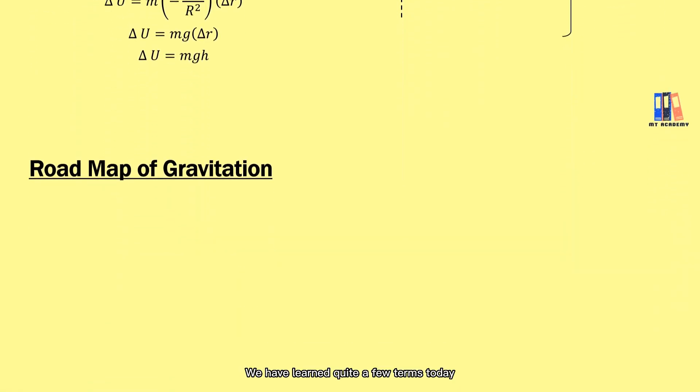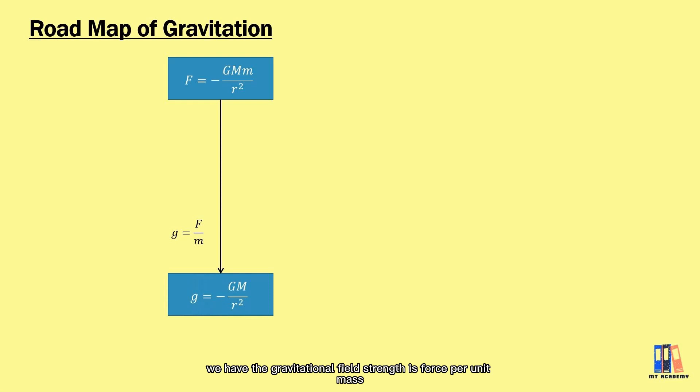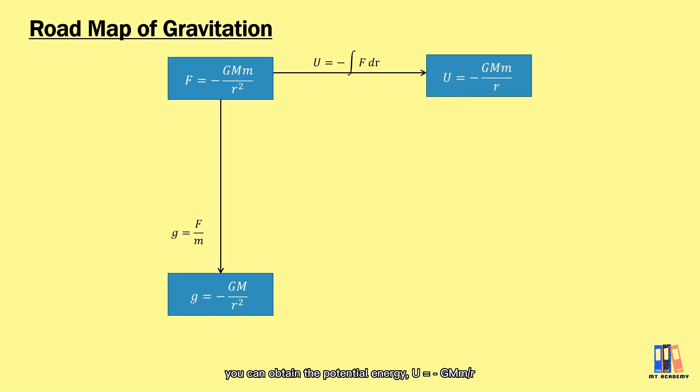We've learned quite a few terms today. First is the formula from Newton's law of gravitation, F = -GMm/r². From here, we have gravitational field strength is force per unit mass, g = -GM/r². Next is to perform the integration of F with respect to distance, we obtain potential energy U = -GMm/r. From the definition of gravitational potential, it is the work done per unit mass, so V = -GM/r.